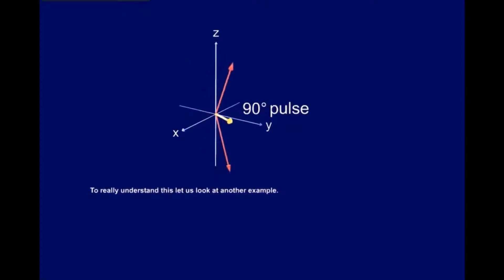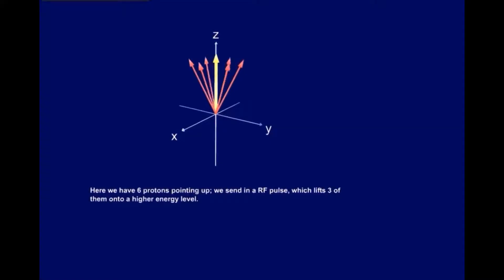To really understand this, let us look at another example. Here we have six protons pointing up. We send in an RF pulse, which lifts three of them onto a higher energy level. The result? We no longer have a longitudinal, but a transversal magnetization, again having used a ninety-degree pulse.